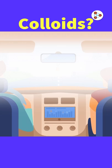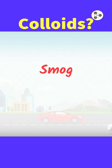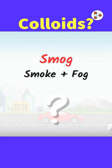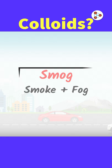During winters, it gets difficult to drive because of smog. Smog is basically a combination of smoke and fog. But why can't we see beyond it? Isn't it just polluted air? The reason we are unable to see beyond smoke, fog or smog is because they are colloids.